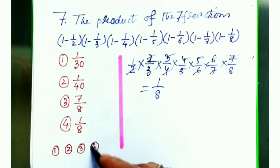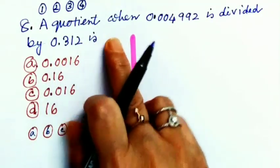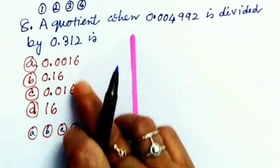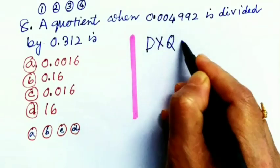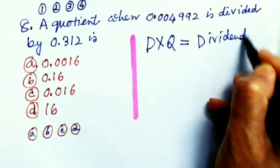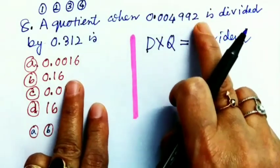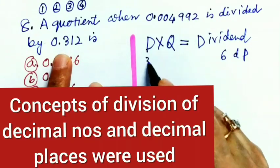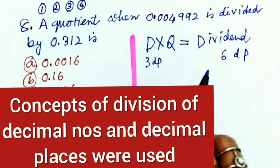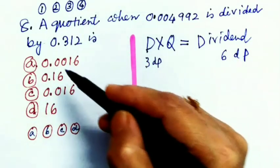Question number 8: A quotient when 0.004992 is divided by 0.312 is? That means what is the quotient? We know that divisor into quotient equals dividend. And here you see, dividend contains how many decimal places? 1, 2, 3, 4, 5, 6 - dividend has 6 decimal places. And in this divisor contains how many? 3 decimal places. So quotient must have 3 decimal places, as in the dividend 6 decimal places are there. So we'll find out the number with 3 decimal places. This one, C. So C is the correct answer.